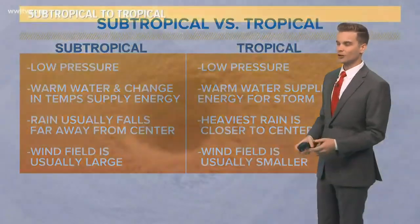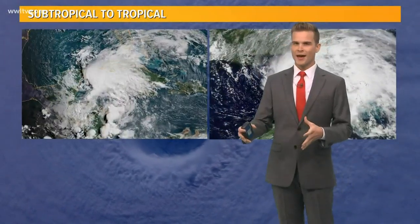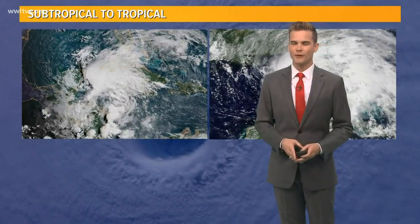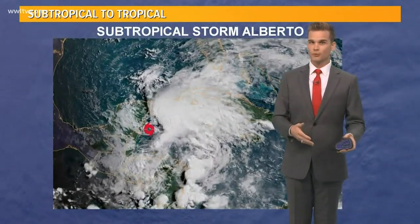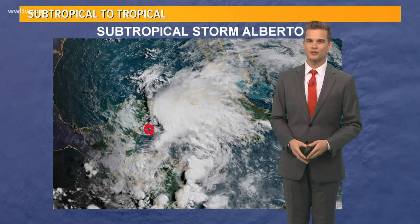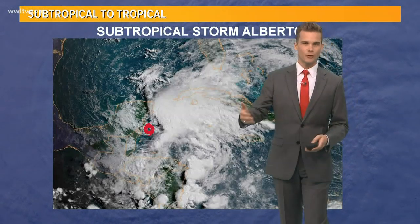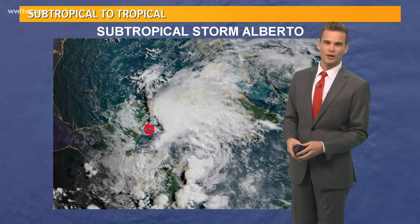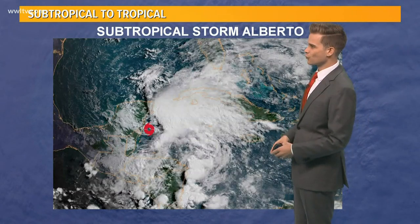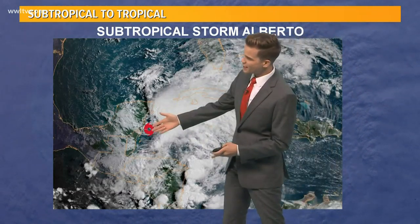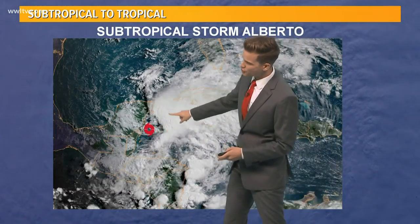So the low pressure is the same, but the structure is a little bit different. A good example of that was subtropical storm Alberto back in 2018. These systems can go through a transition period, and that's exactly what subtropical storm Alberto did.